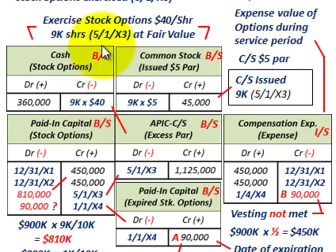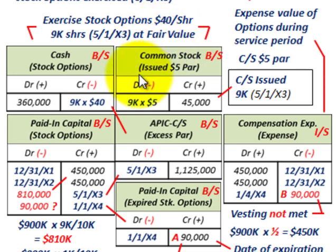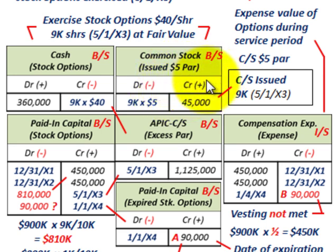Now we exercise the stock options at the option price of $40 per share — we use the option price, not the market price. On 5/1/x3, 9,000 shares are exercised. We debit cash for $360,000 (9,000 shares × $40 option price). Then for common stock, with the $5 par value, we credit common stock par for $45,000 (9,000 shares × $5 par).